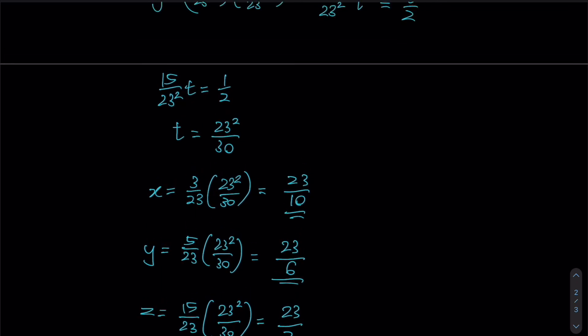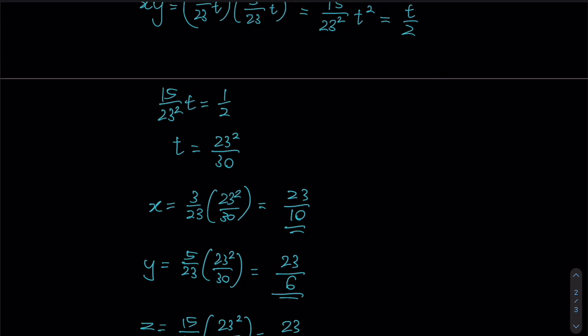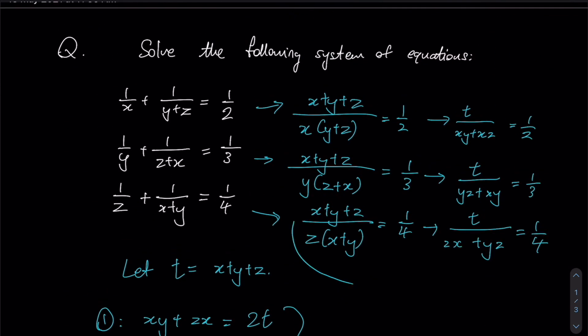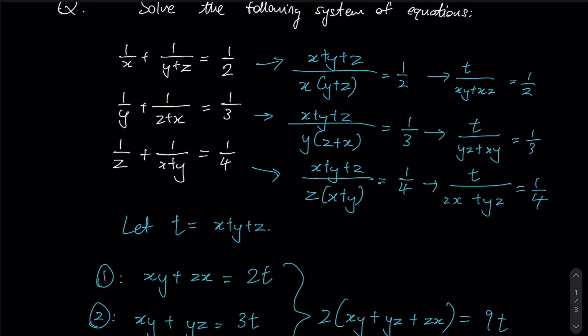This working can be quite tedious, but if you are diligent and meticulous you should get the correct answer. If you substitute these three values back into the original three equations, you will see that they satisfy all three — so these are your solutions. To briefly recap: our first step was to obtain three similar numerators so we could use the substitution t equals x plus y plus z.